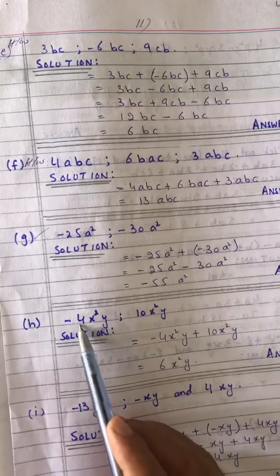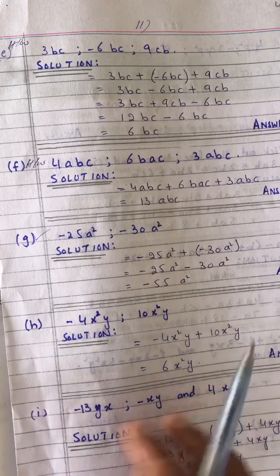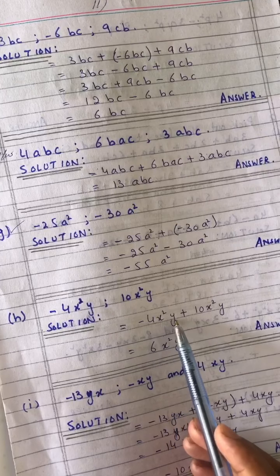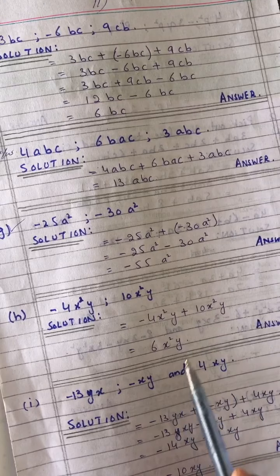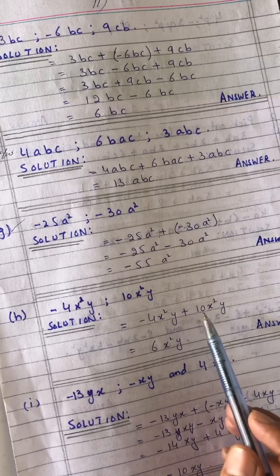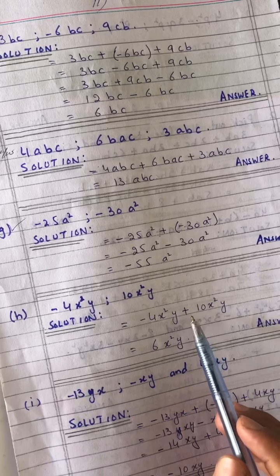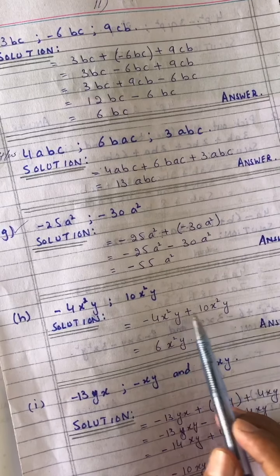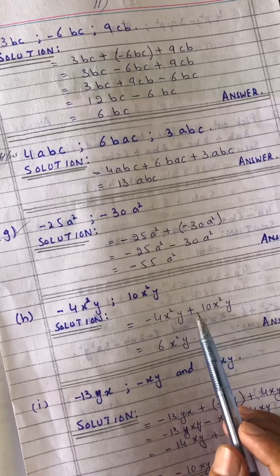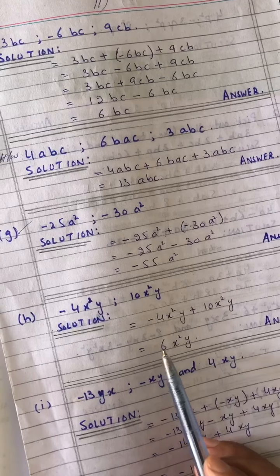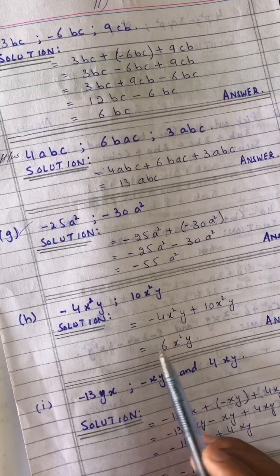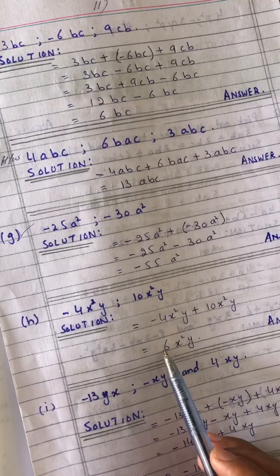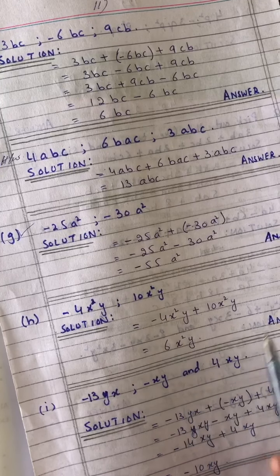Question H: minus 4x²y and 10x²y. Solution: -4x²y + 10x²y. If the plus sign is greater in value we put plus; 10 minus 4 — the plus sign is greater. Answer: 6x²y.